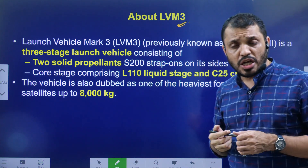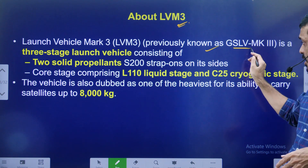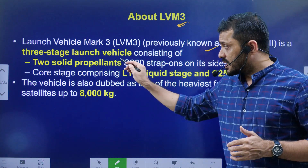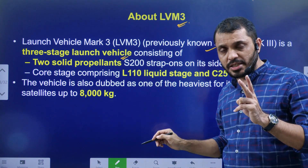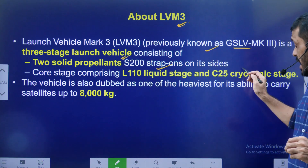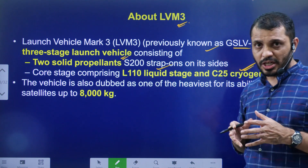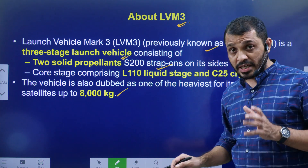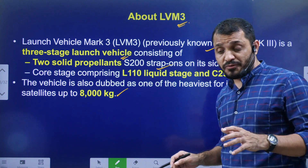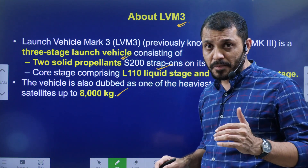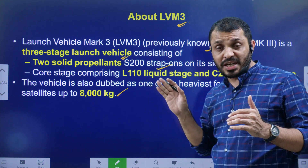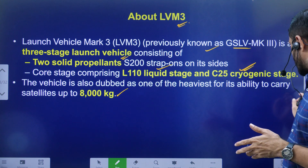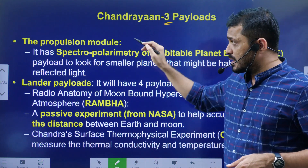Regarding the Launch Vehicle Mark 3 — this is a three-stage launch vehicle, somewhat advanced compared to GSLV Mark 3. It consists of two solid propellant stages, one liquid stage, and one cryogenic stage. It can carry payload up to 8,000 kg. Success with this launch vehicle will also help greatly towards the Gaganyaan project.